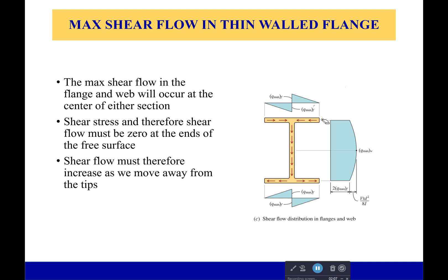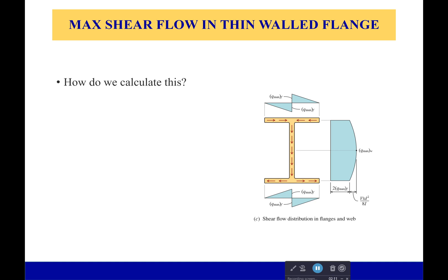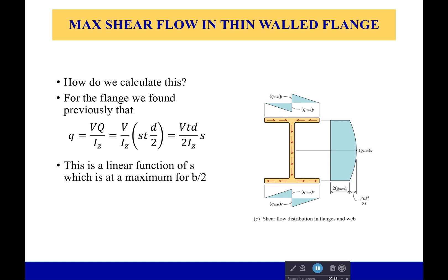Now, of course, how we calculate this? Well, we already found our terms for our shear flow. And for looking at the flange right here, we see that this is going to be a maximum for b over 2, which makes sense—when we reach the middle, that's a maximum.